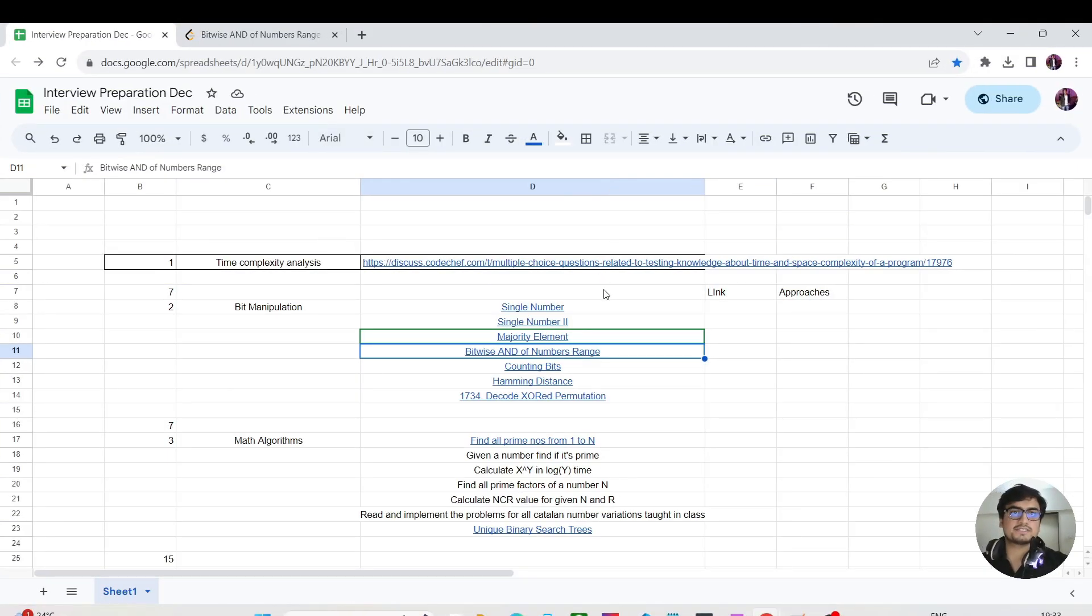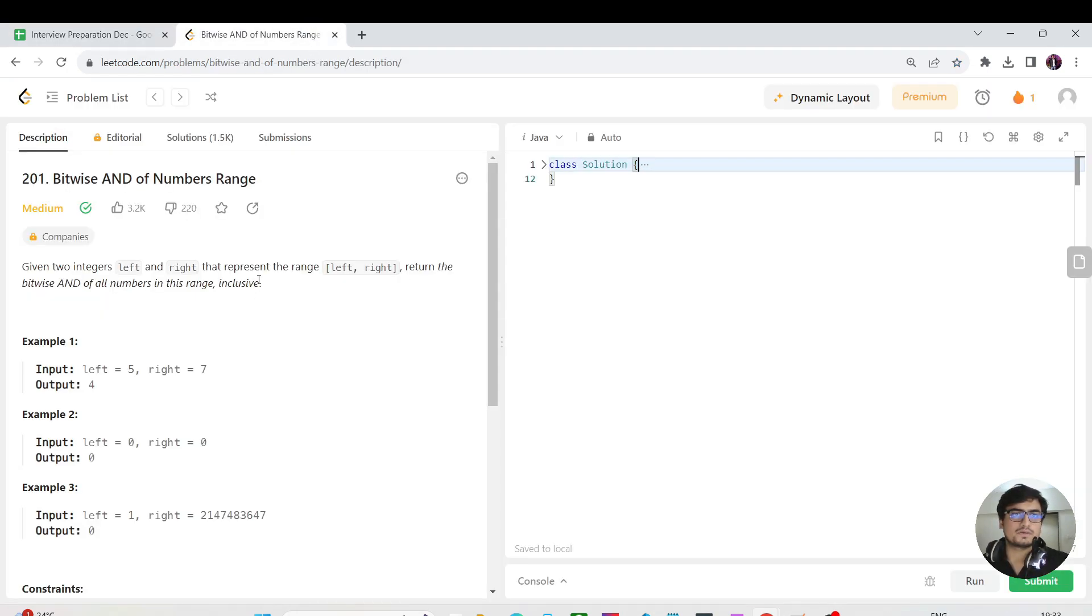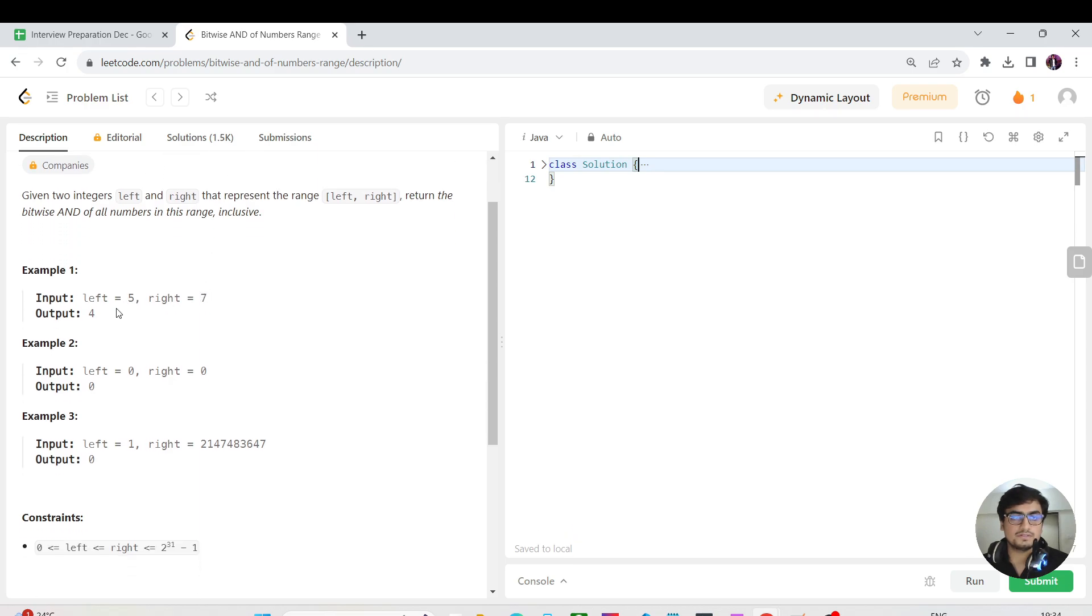Okay, what's up guys, this is Akshay here. Let's continue with the next question of our bit manipulation playlist. This question is bitwise AND of numbers range, a medium category problem. We've been given two integers left and right that represent the range inclusive of left to inclusive of right. We need to return the bitwise AND of all the numbers in this range.